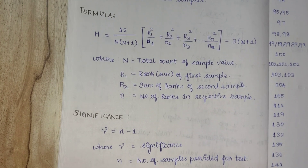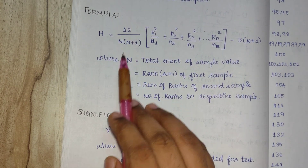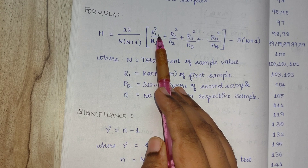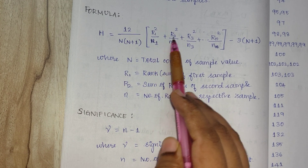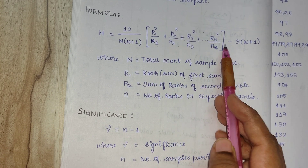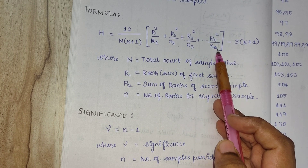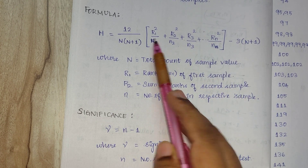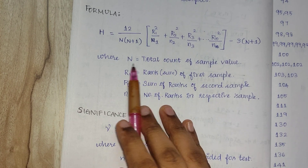In the H test, the formula is: H is equal to 12 divided by N into (N plus 1), the whole multiplied by the sum of R1 squared divided by n1, plus R2 squared divided by n2, and so on till Rn squared divided by nn, minus 3 into (N plus 1).